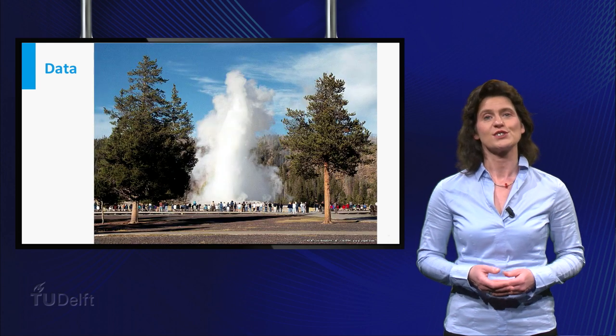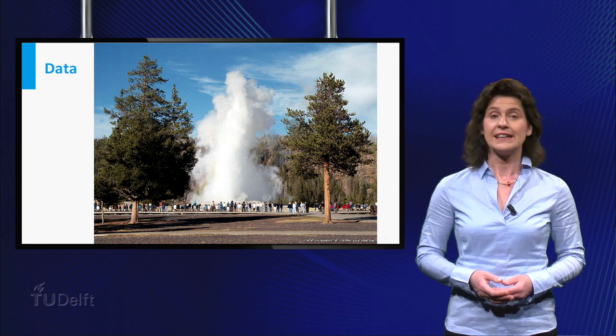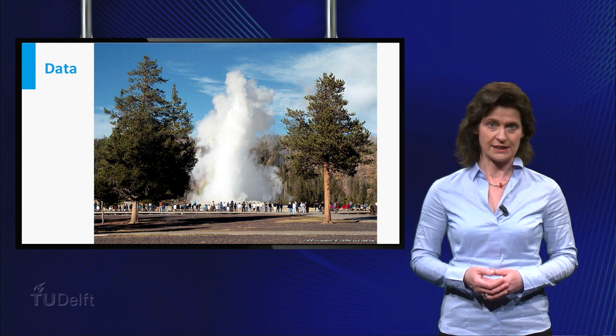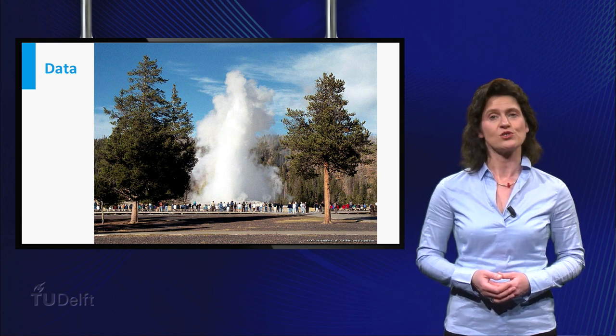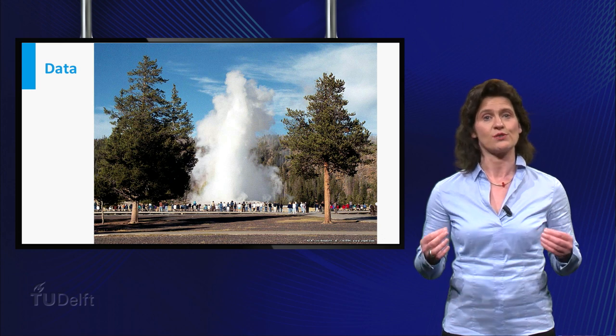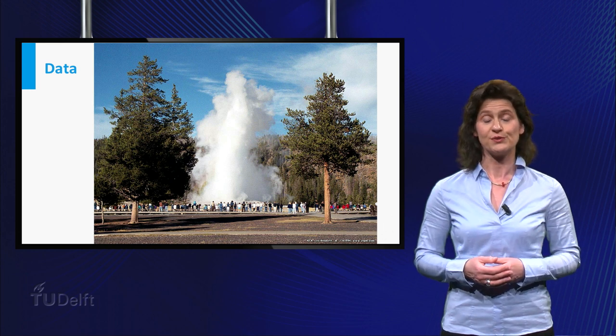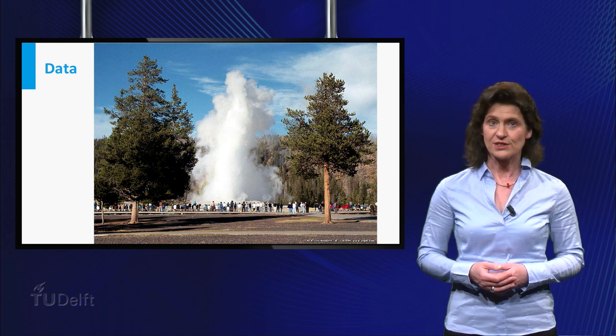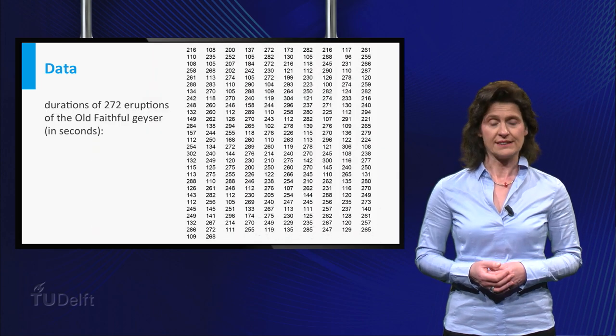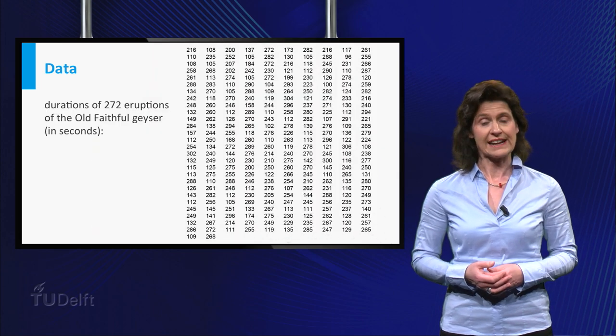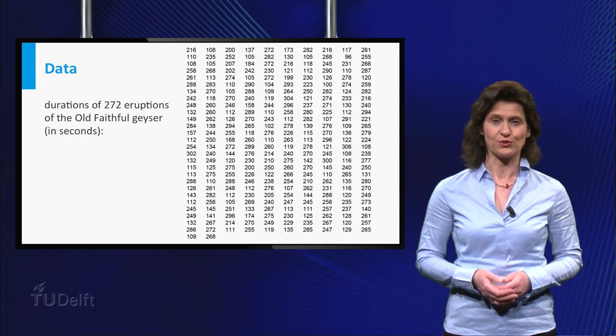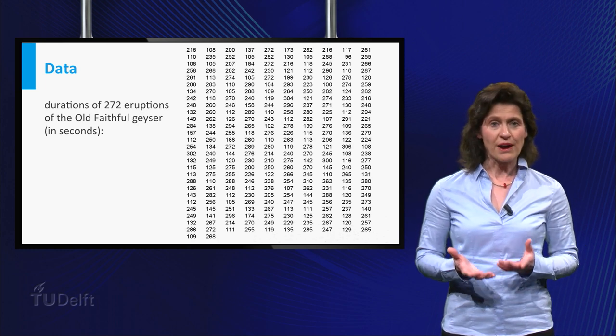Let's first describe what the data are. Here you see the Old Faithful geyser at Yellowstone National Park in the USA. The geyser has eruptions of hot water several times a day. The durations of these eruptions were recorded during 15 days and measured in seconds. What you can see from the data set is that the eruptions vary in length, indicating there is some randomness involved. What can you say about this randomness?